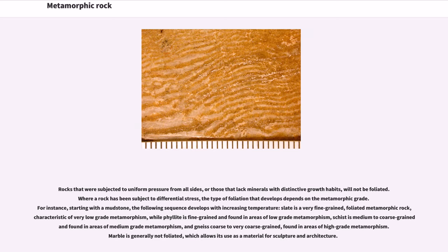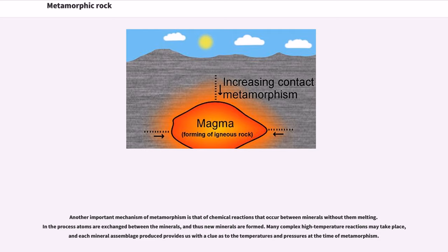Marble is generally not foliated, which allows its use as a material for sculpture and architecture. Another important mechanism of metamorphism is that of chemical reactions that occur between minerals without them melting. In the process, atoms are exchanged between the minerals, and thus new minerals are formed. Many complex high-temperature reactions may take place, and each mineral assemblage produced provides a clue as to the temperatures and pressures at the time of metamorphism.